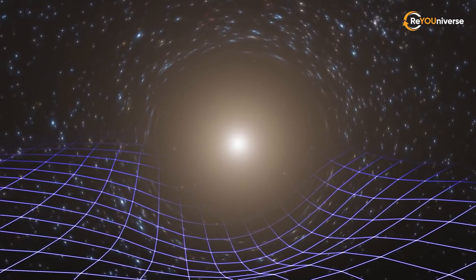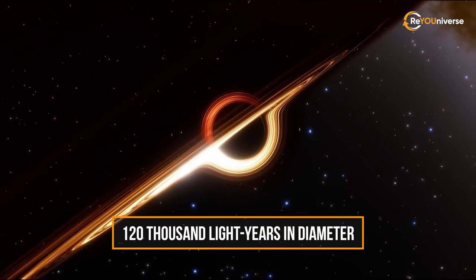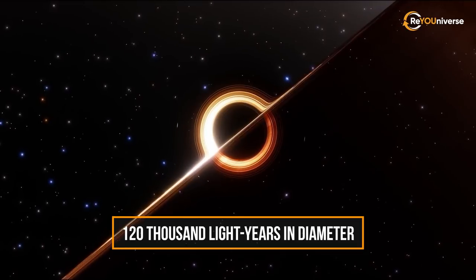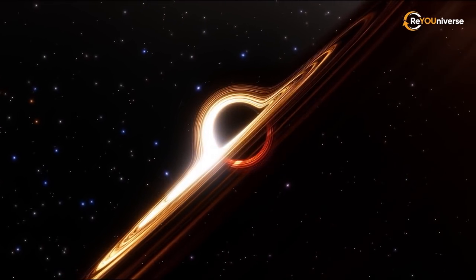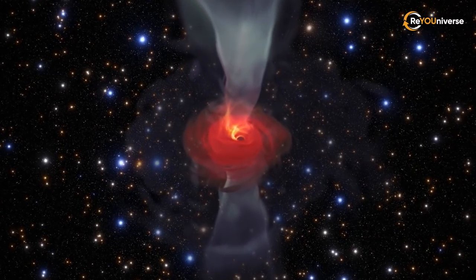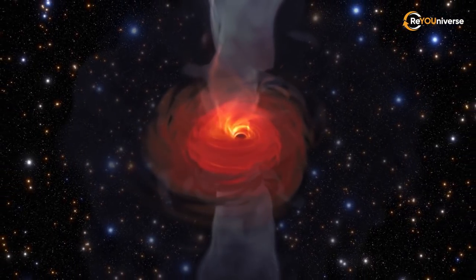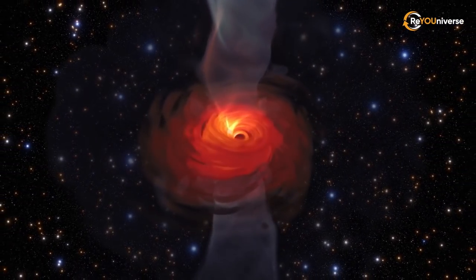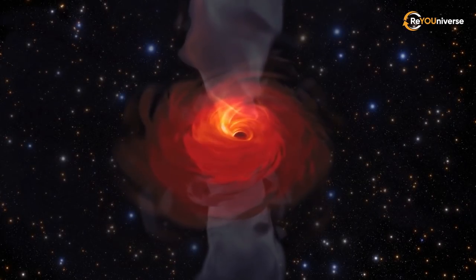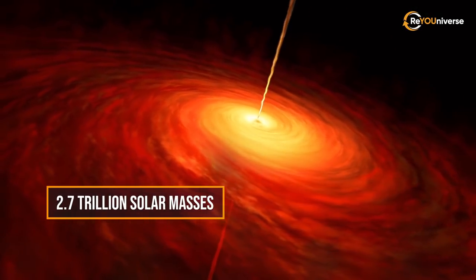M87 belongs to supergiant galaxies. It reaches 120,000 light-years in diameter. This is slightly larger than the Milky Way's radiance, but the galaxies are by no means similar. M87 is not a flat spiral, but a sphere weighing a whopping 2.7 trillion solar masses.